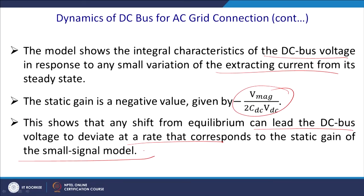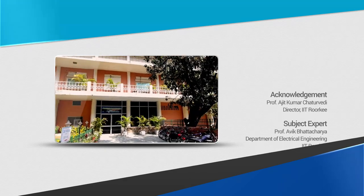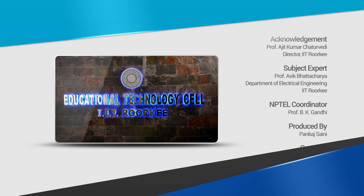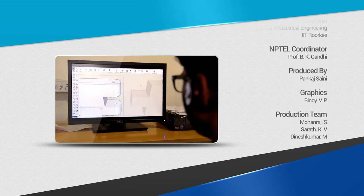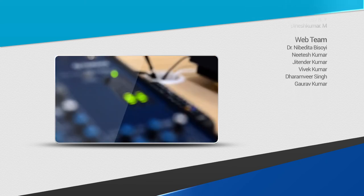The key takeaway from this modeling is that any shift from the equilibrium point can lead to the DC bus voltage to deviate at a rate that corresponds to the static gain of the small signal model, so you can know at which rate this change is occurring. Thank you for your attention. We shall continue with the modeling of other converters in our next class.